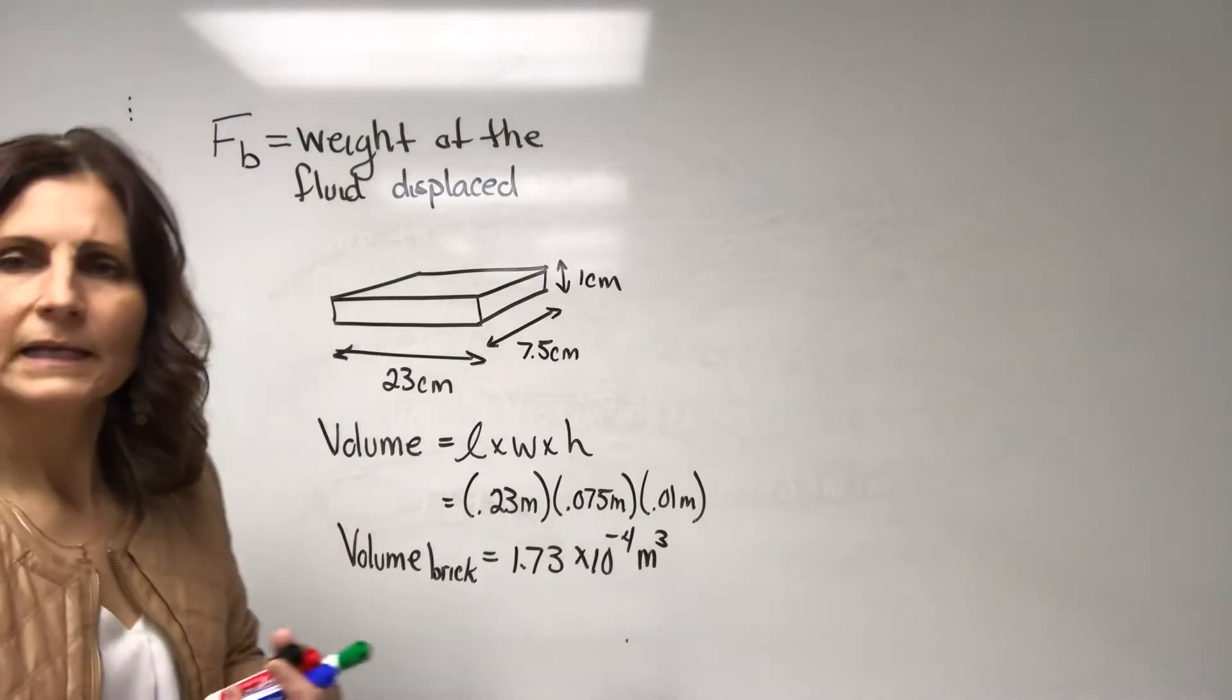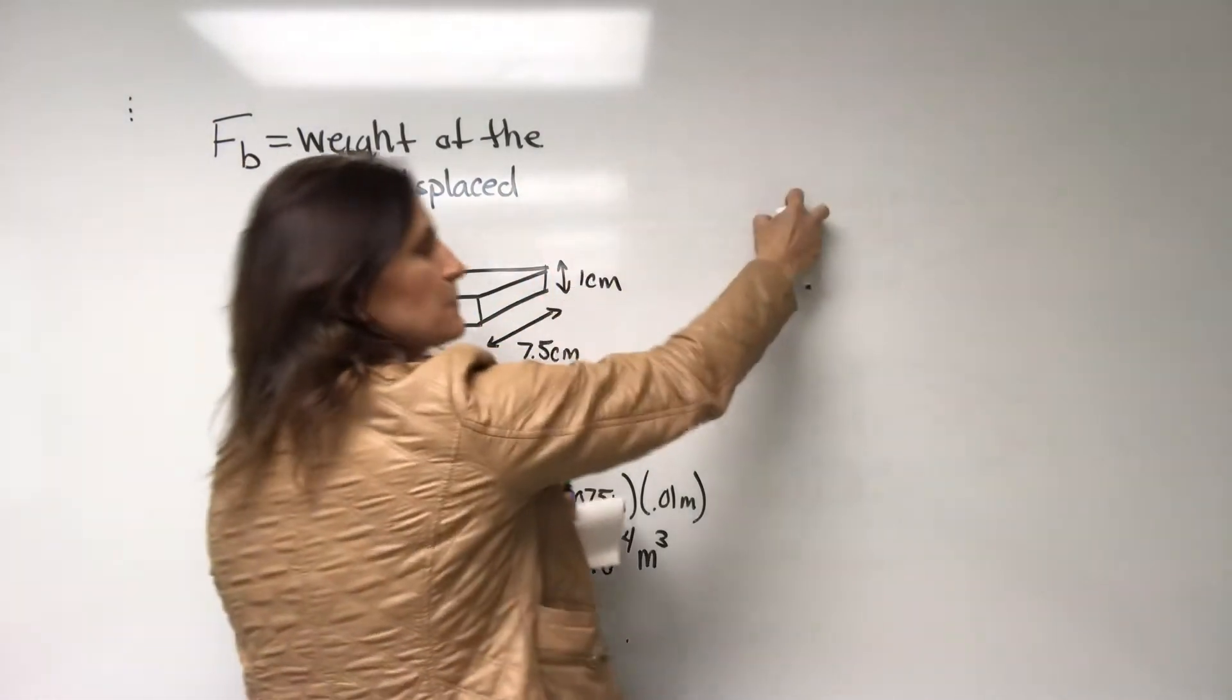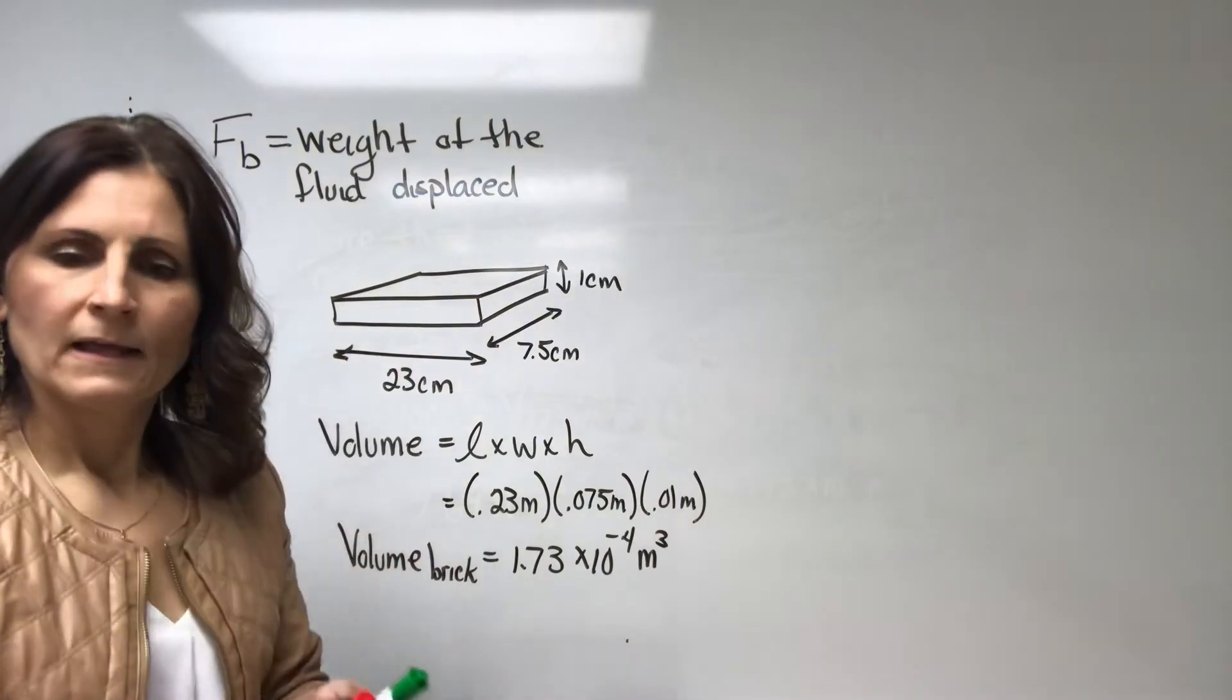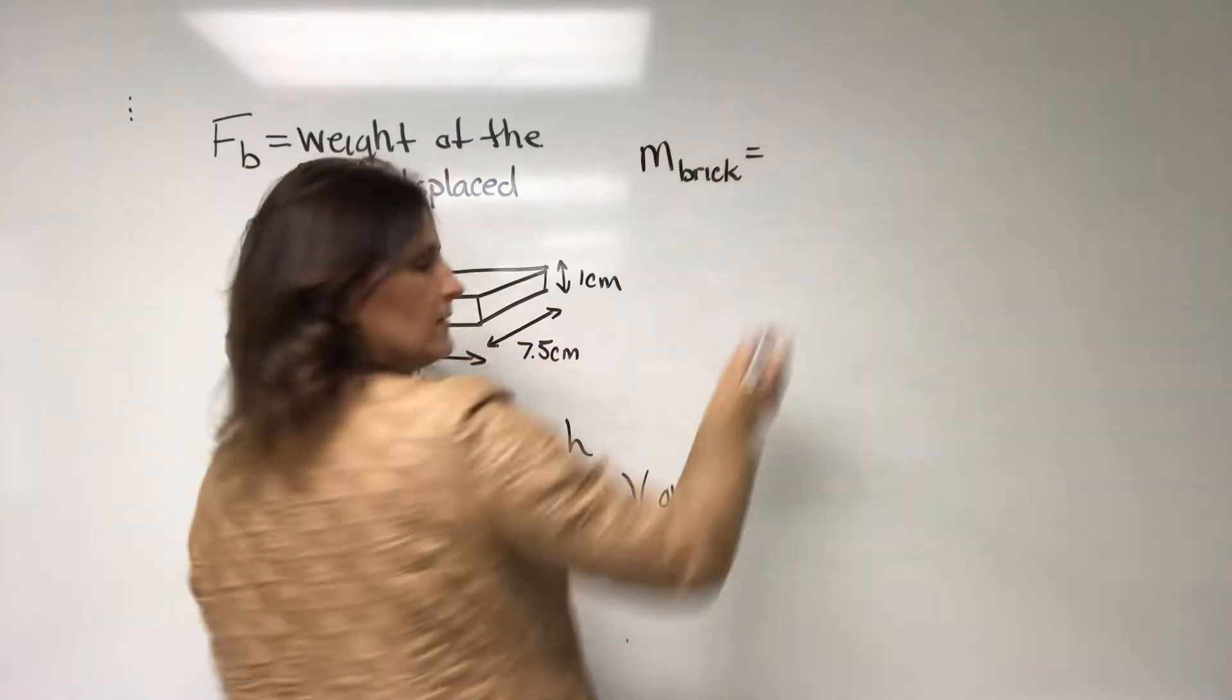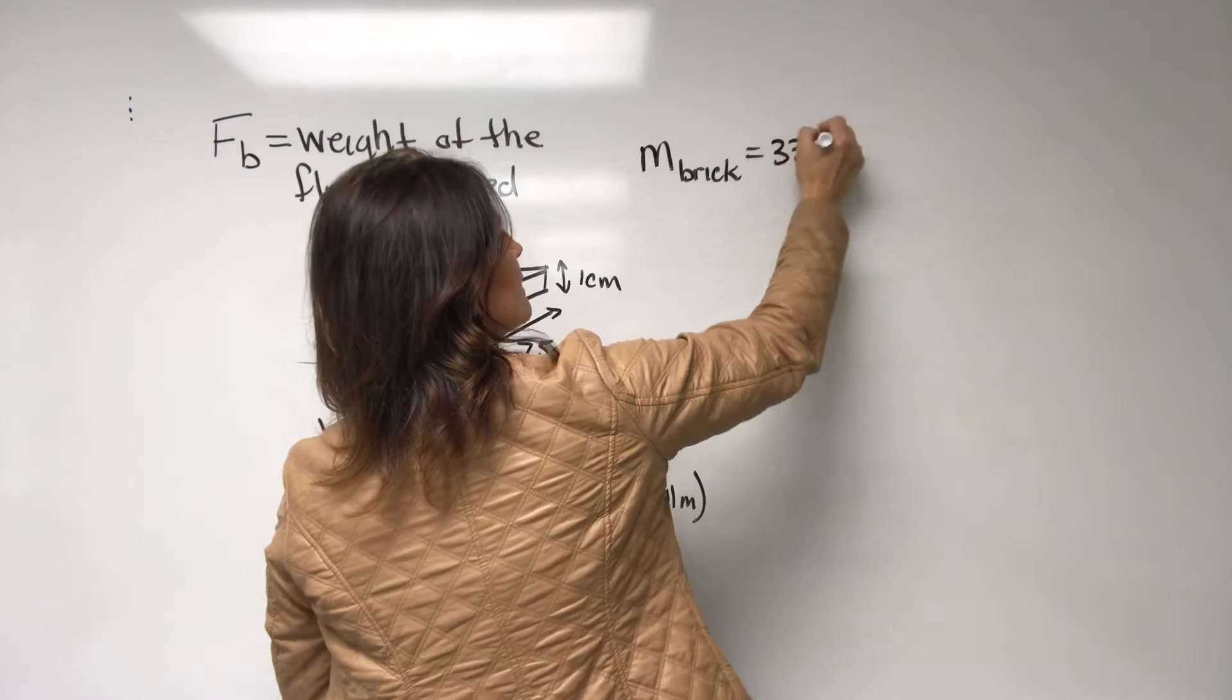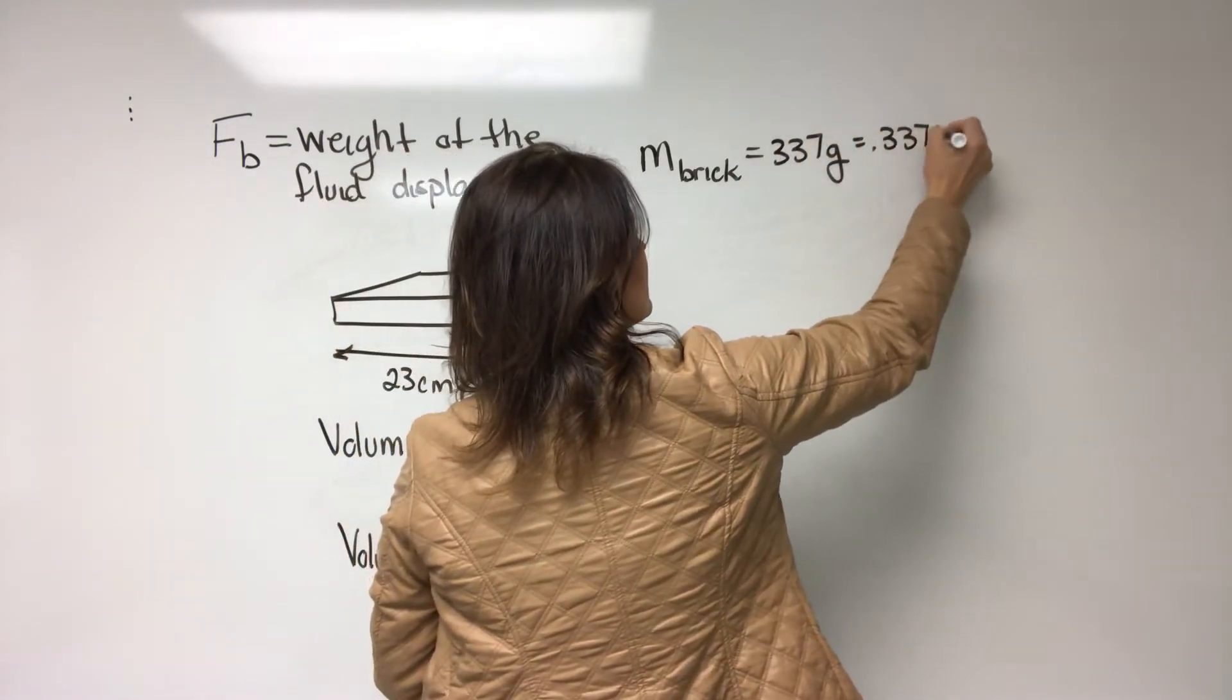So if I completely submerge this brick into the water, the most water it can displace is going to be this volume. Okay. The mass of this brick was measured on a scale and I got that mass to be 337 grams which is 0.337 kilograms.